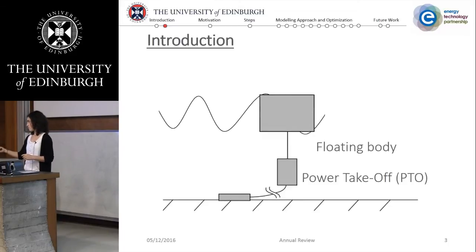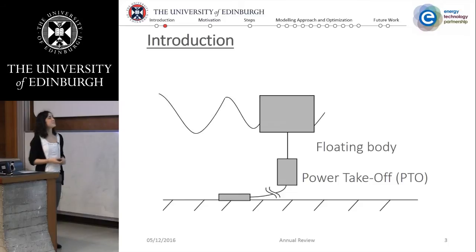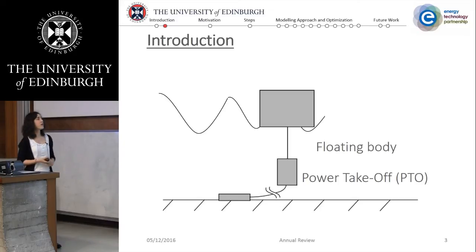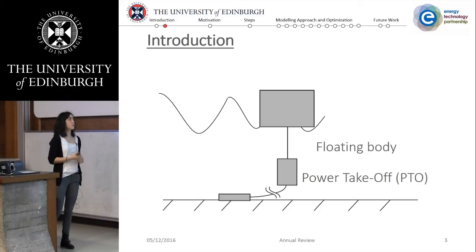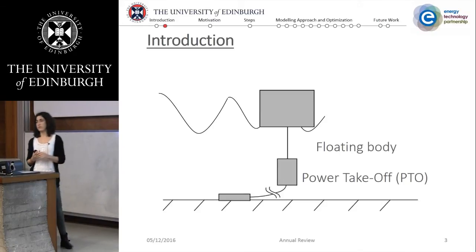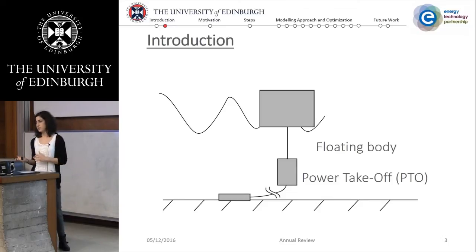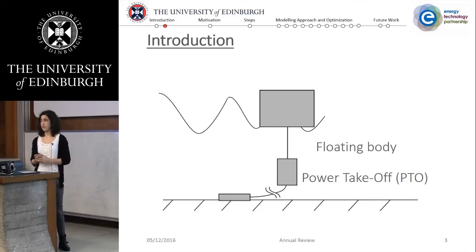The wave energy converter I'm focusing on for my PhD thesis is a point absorber. Important to know is that maximal power extraction will take place when the frequency of the incoming waves matches the natural frequency of the device, and the natural frequency depends on the geometry of the device. It's not trivial how to design or find this geometry.